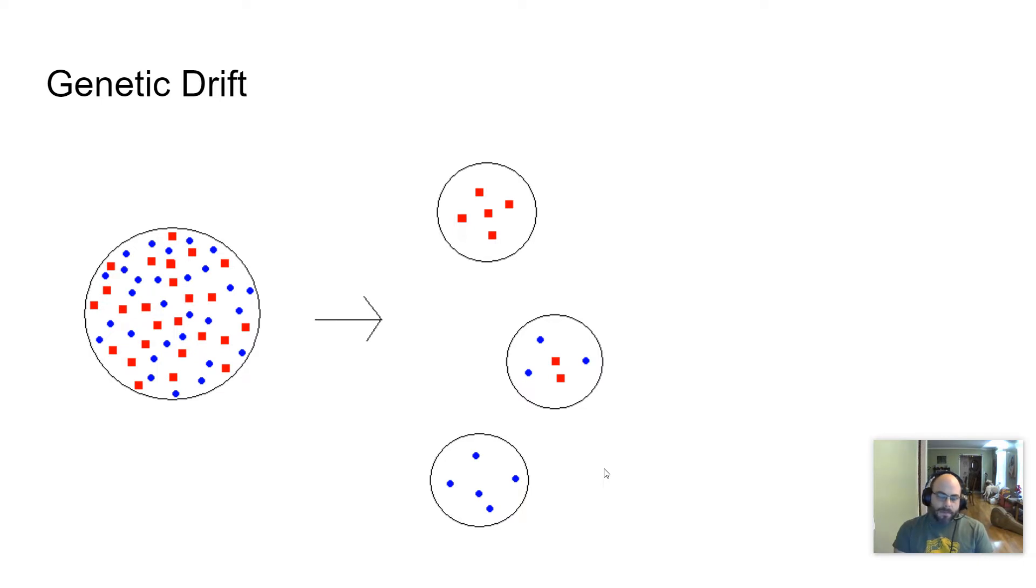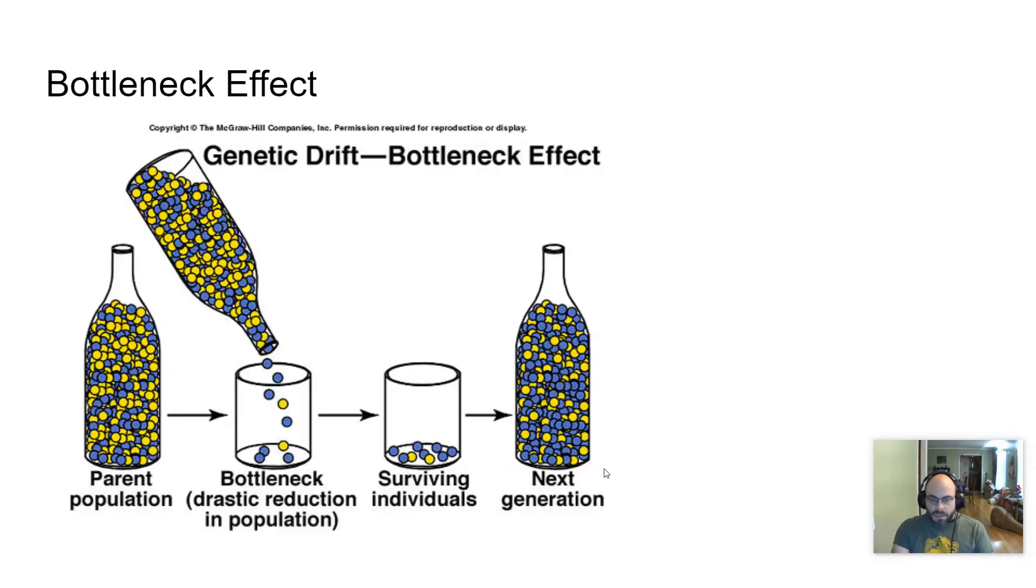What that means is that the actions are not based upon an individual's fitness or ability to survive. There's no particular selective pressure that's going on. This is some sort of occurrence that takes place that is random and affects the population in a random way.